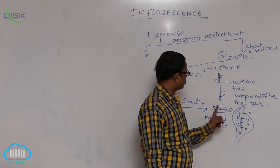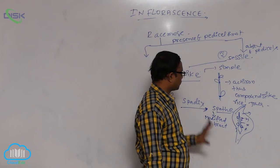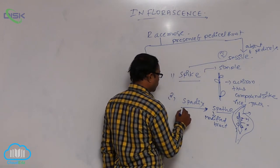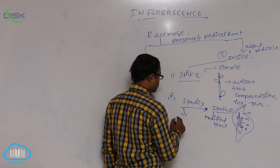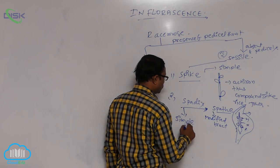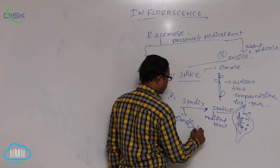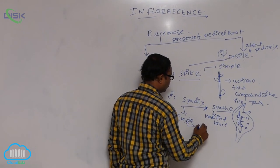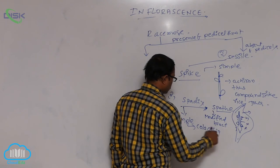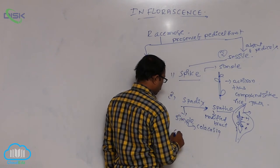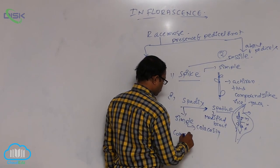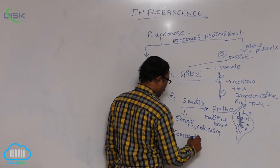So spadix is of two types: simple and compound. An example of the simple type is Colocasia. Next is the compound type.